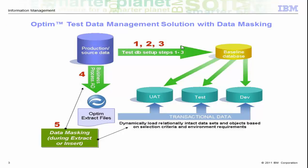The figure represents an ideal data masking process. At the top is the production database from which Optum extracts test data, masks them, and stores them in extract files. Then, masked data are inserted into the target database — that is, test, development, and quality assurance environments.